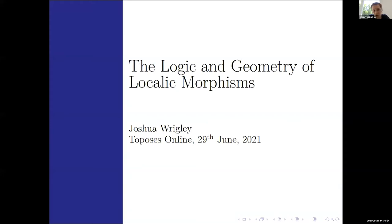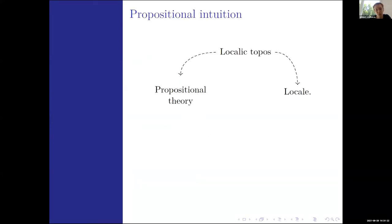We might start off with some structure which doesn't have all of the properties we want it to have, and toposes are going to give us a way of talking about what structure there should be and what structure we can add. In particular, as the title says, we'll be looking at how we can add structure to certain logics coming from locality morphisms. The idea is that we want to utilize our intuition coming from a propositional setting.